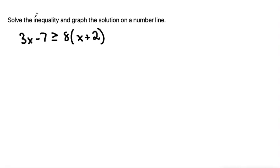This problem is asking us to solve the inequality and graph the solution on a number line. So first, when I have an inequality like this, I would start by distributing the number outside the parentheses. This would be 3x minus 7 is greater than or equal to, distribute the 8 to the x to make 8x, and distribute the 8 to the 2 to make 16.